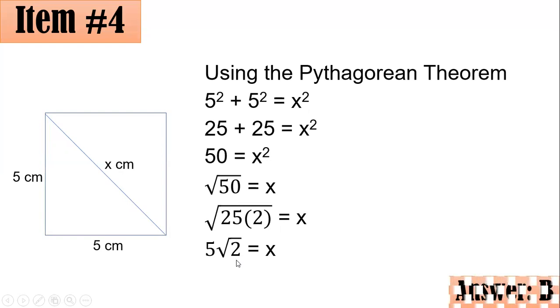Hence, the length of the diagonal of a square with 5 cm side length is 5 square root of 2 centimeters. Letter B.